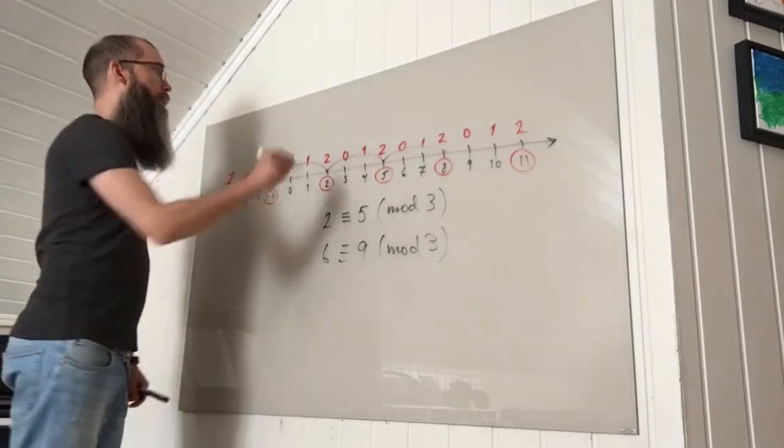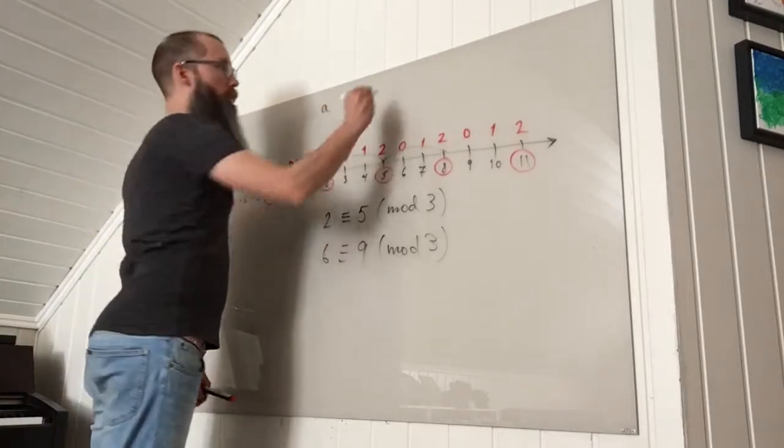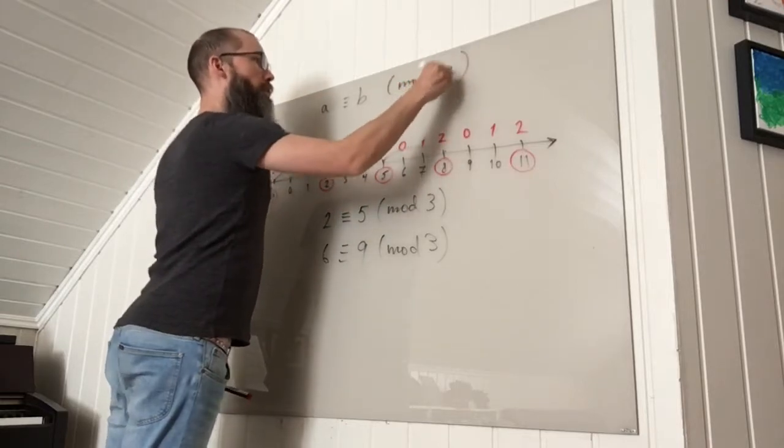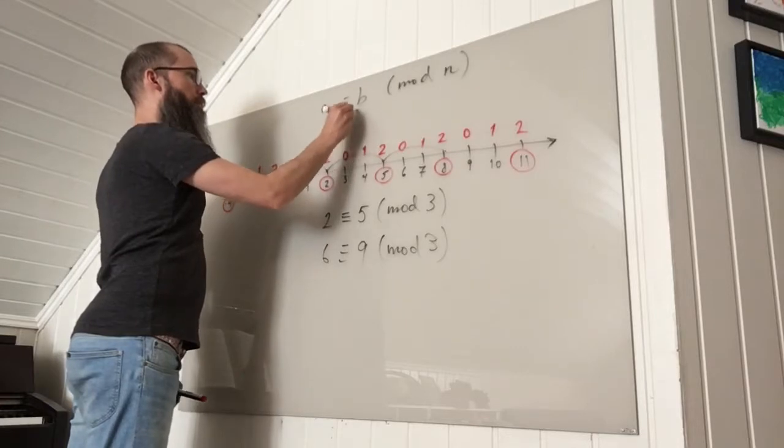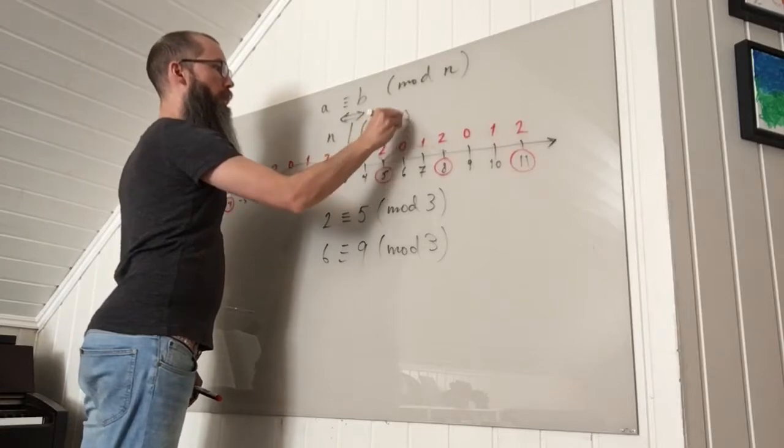In general, a is said to be congruent b mod n. That is equivalent to n dividing the difference b minus a.